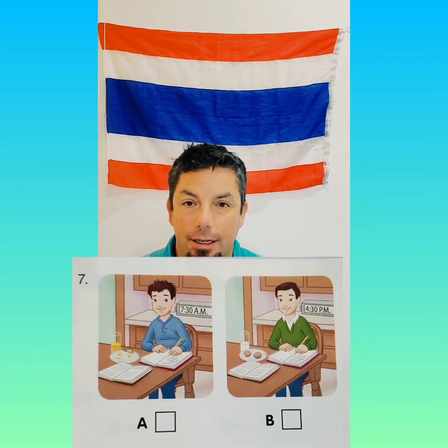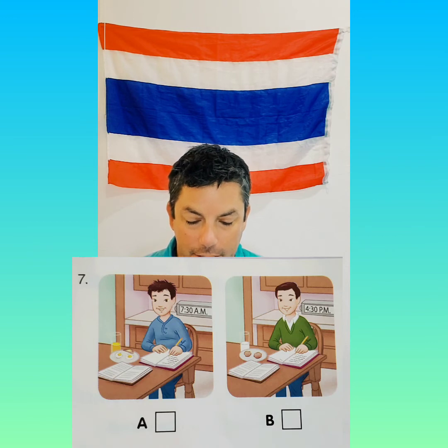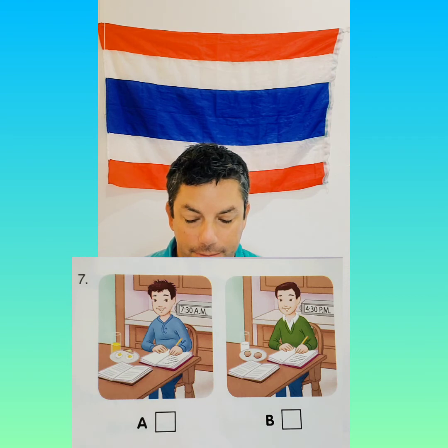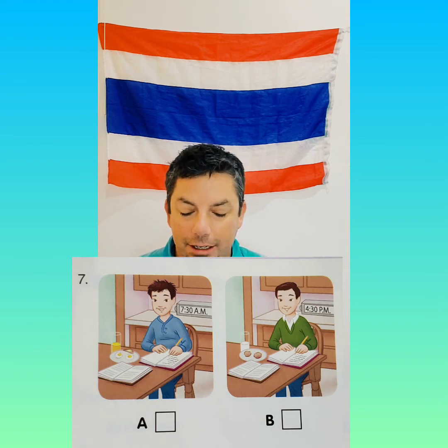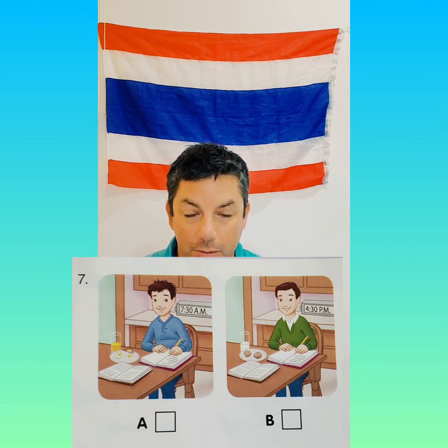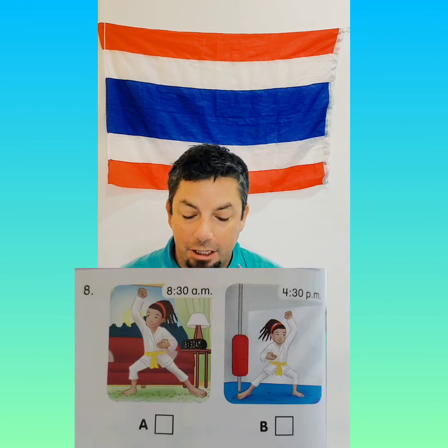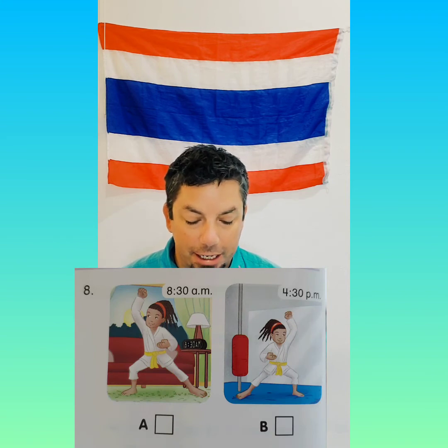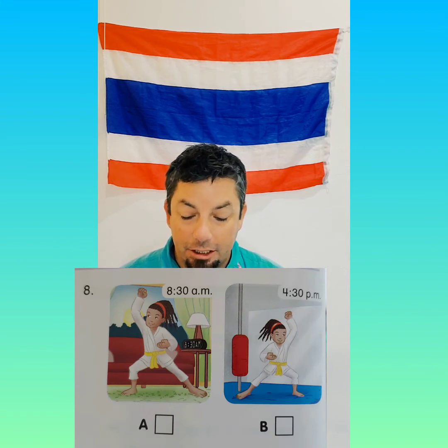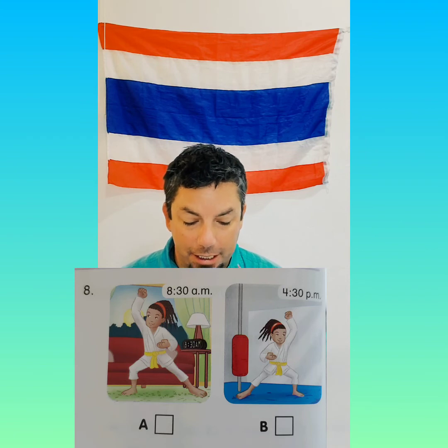Number seven: When does he do homework? He always does homework before school. When does he do homework? He always does homework before school. Number eight: When does she usually practice karate? She usually practices karate after school.